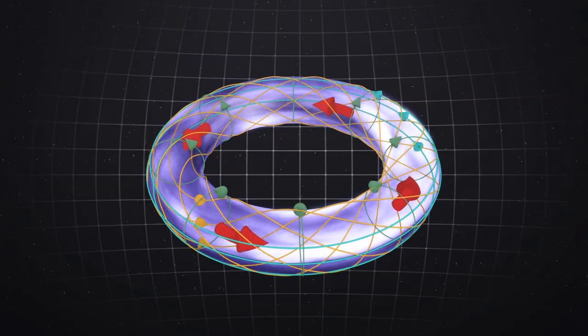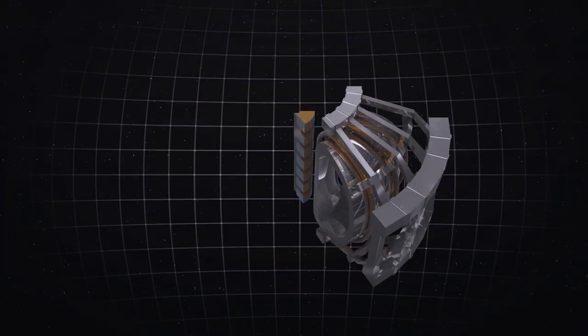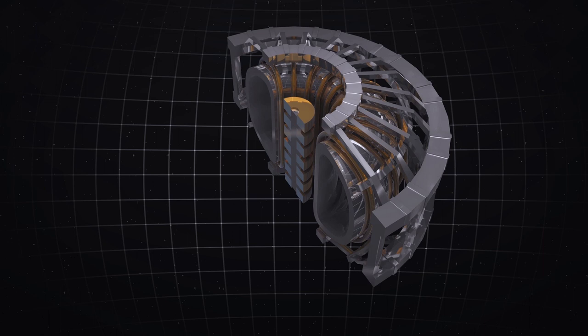A tokamak is a machine that creates three powerful magnetic fields to keep a superheated plasma confined. The powerful magnetic fields are designed to keep the plasma from touching the machine.